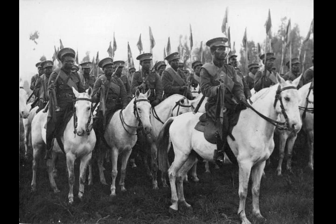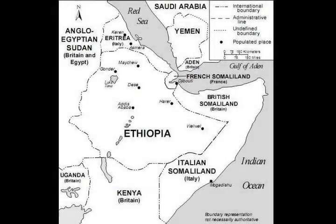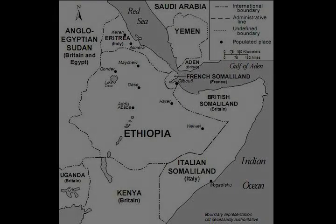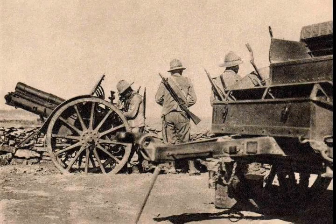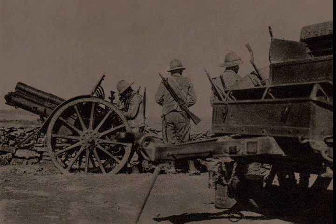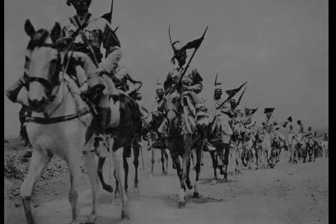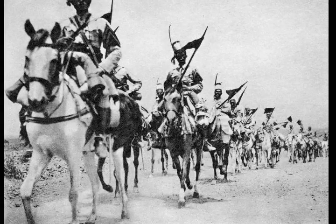Between April and December, Graziani opened up new roads, developed the port facilities at Mogadishu, solved a difficult water supply problem, stocked up provisions and munitions, and purchased hundreds of motor vehicles. He successfully acquired American-made trucks from British dealers in Mombasa and Dar es Salaam. On 3 October 1935, when de Bono launched his invasion in the north without a declaration of war, Graziani was logistically prepared for an advance on Harar in the south.